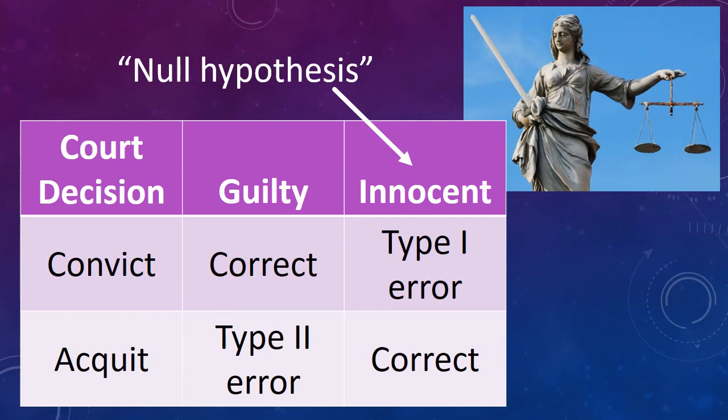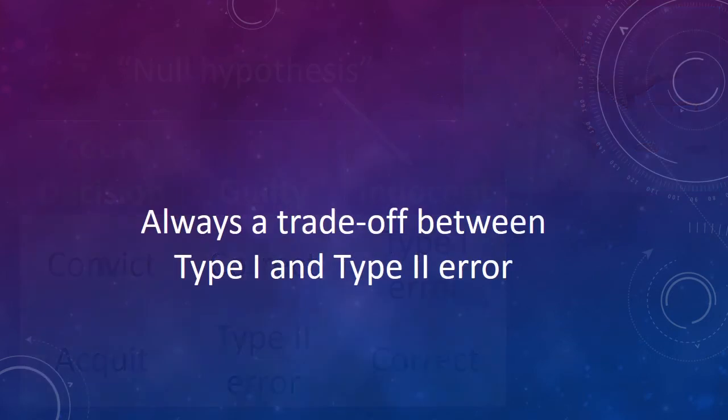Now ideally, you'd like to minimize the number of errors you make. To limit Type I error, you could set a more stringent cutoff. Instead of looking for p less than 0.05, you could look for p less than 0.01, which means you'd expect to see small p-values only 1% of the time when the null hypothesis is true, instead of 5%. But unfortunately, if you decrease your chances of a Type I error, you increase your chances of a Type II error, and vice versa. So we have to live with some kind of happy balance between the two.